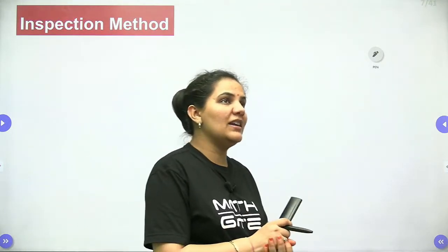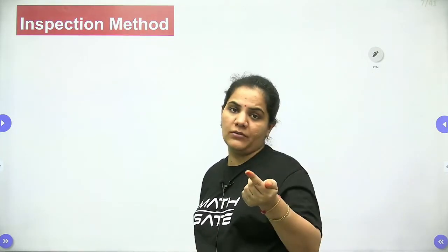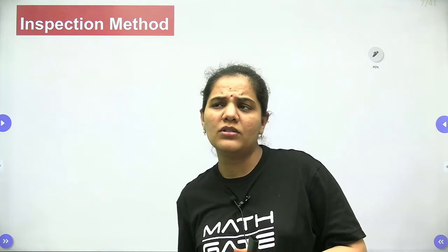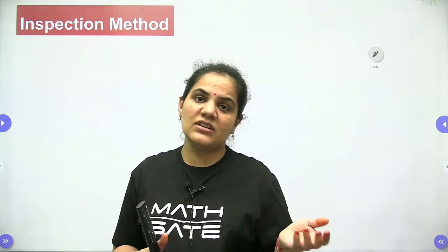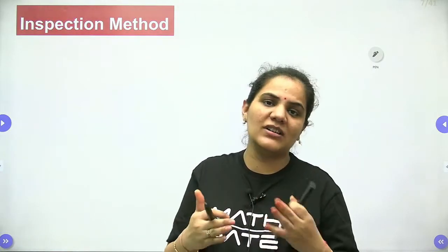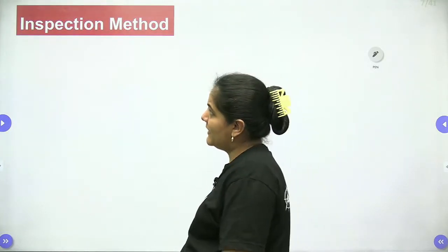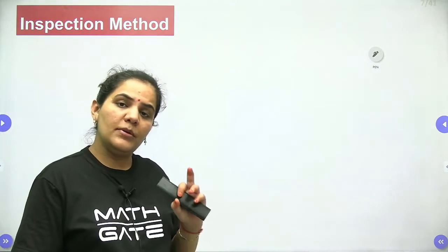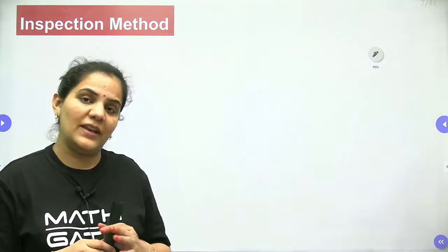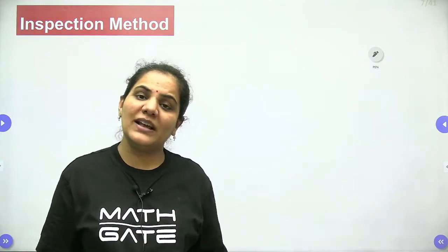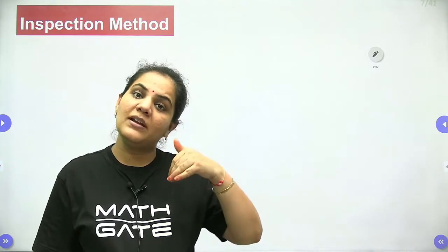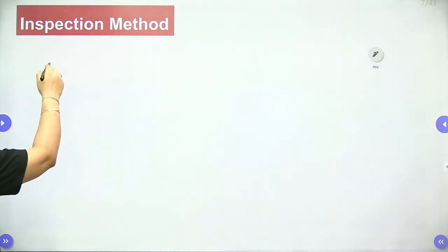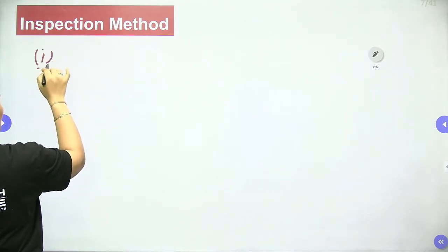The inspection method, as its name suggests, involves observing the equation to convert it into exact form. We focus on recognizing specific patterns in parts of the given equation. There are 10 standard forms you should know before applying the inspection method. Let's discuss these forms — methods to convert a non-exact equation into an exact equation.